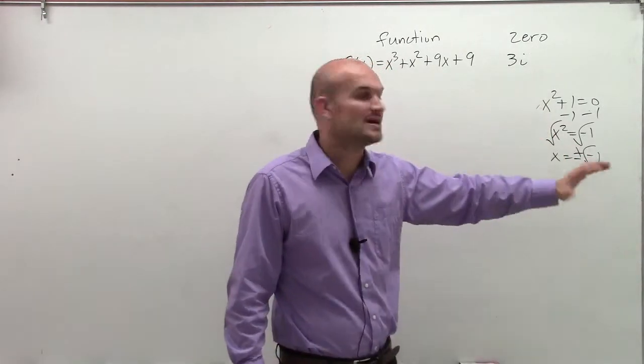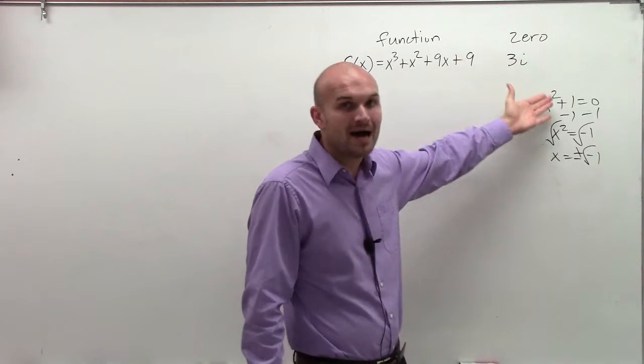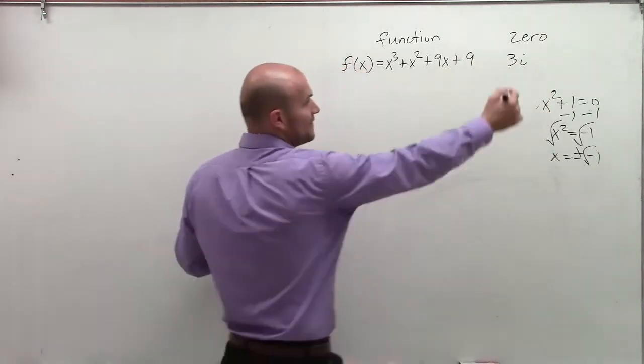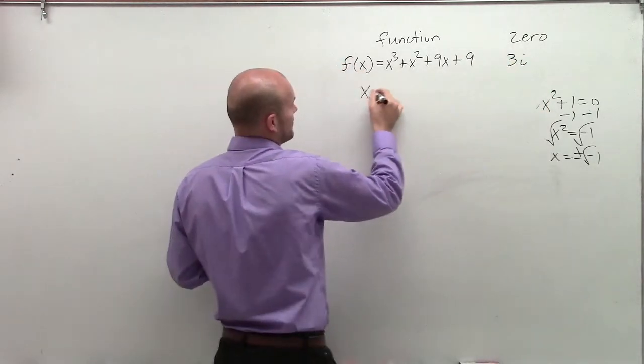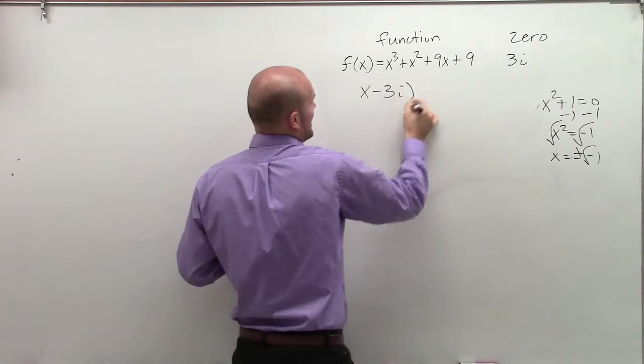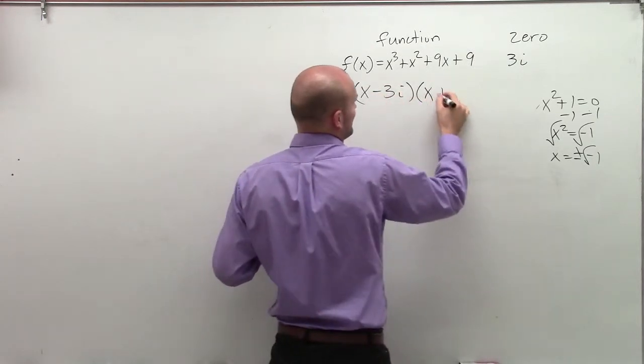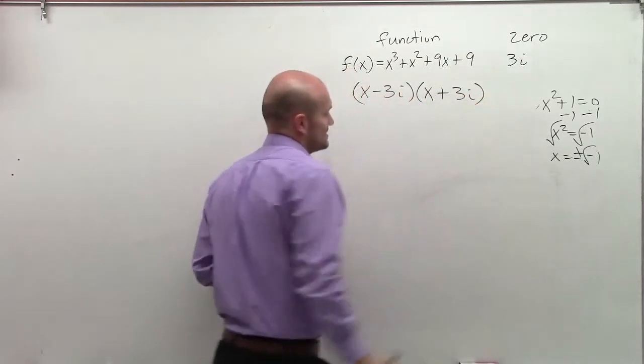So if I'm talking about zeros, I have to make sure I include the positive and the negative. So therefore, if 3i is a zero, then I can say I have two factors: x plus 3i and x minus 3i.